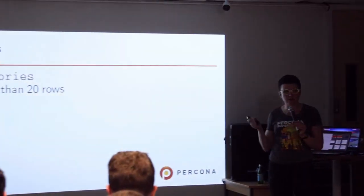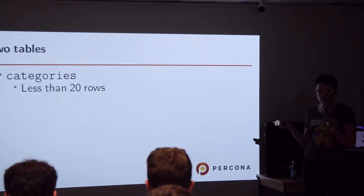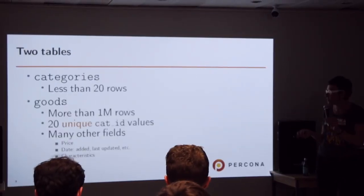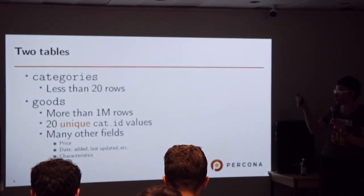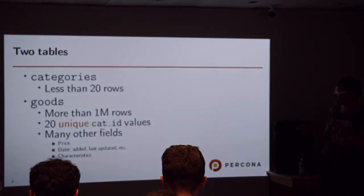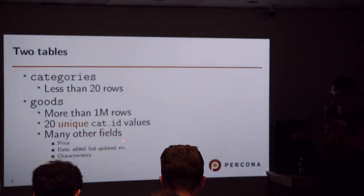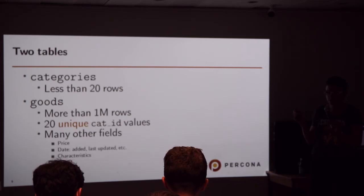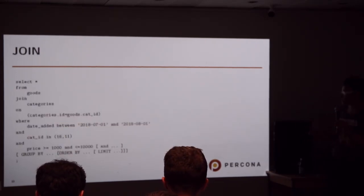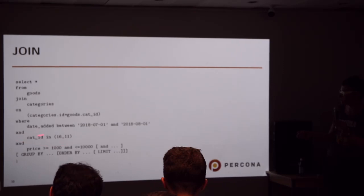Use case one: we have two tables. One is small — let's call it 'categories', like for an online shop. The second one is quite big and contains all goods in the shop — it has many rows, a foreign key relationship, and many other fields like price, date, store location, and everything else. We're joining goods with categories on category ID, filtering by a range of category IDs, and applying a price condition.